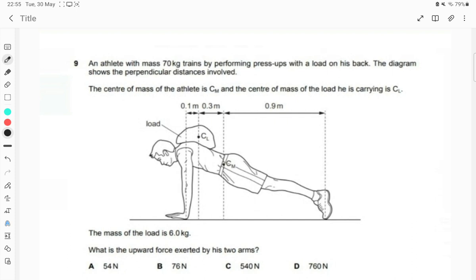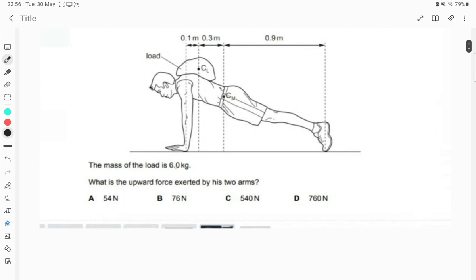So in the diagram you will see an athlete, center of mass marked, you will see the load of which the center of mass is given. The diagram shows the perpendicular distance involved. Why perpendicular distance? Because the question is related to moments.